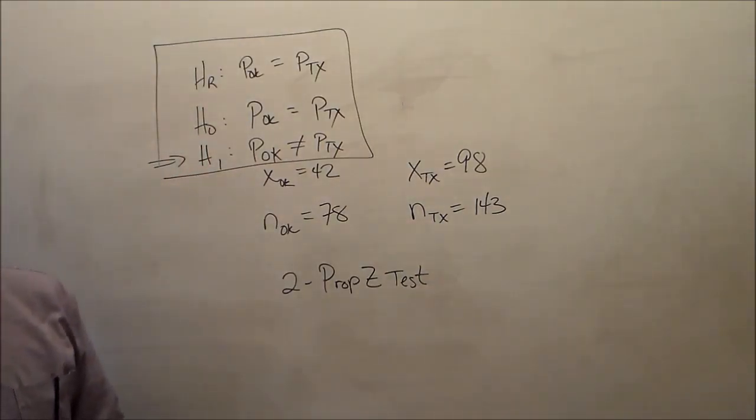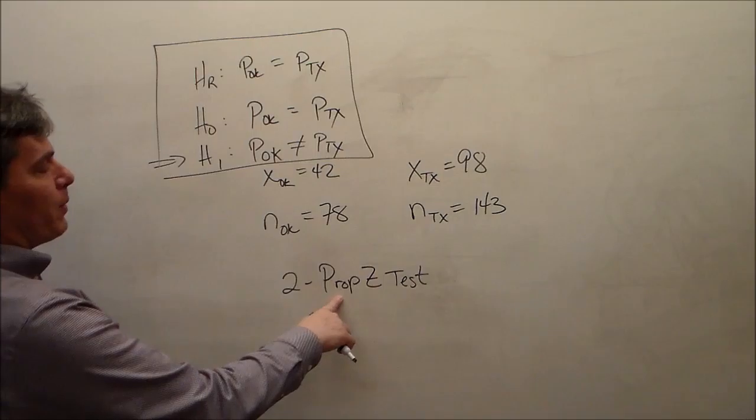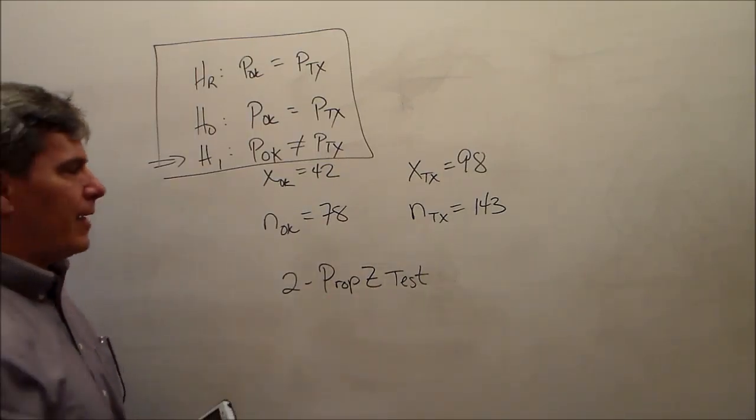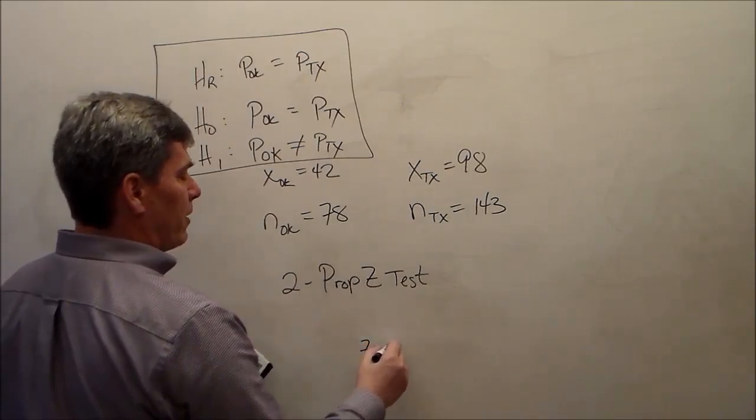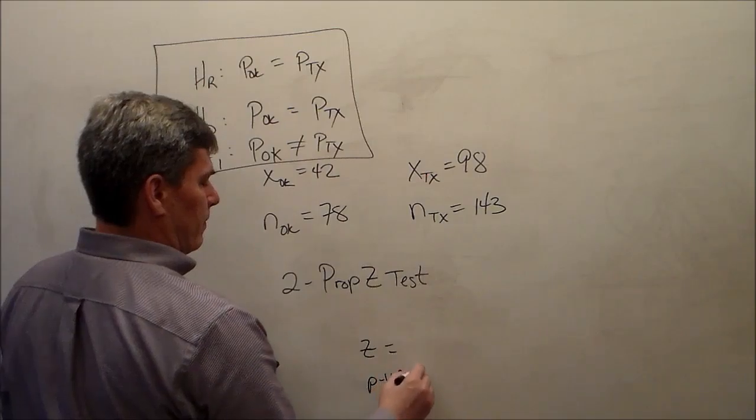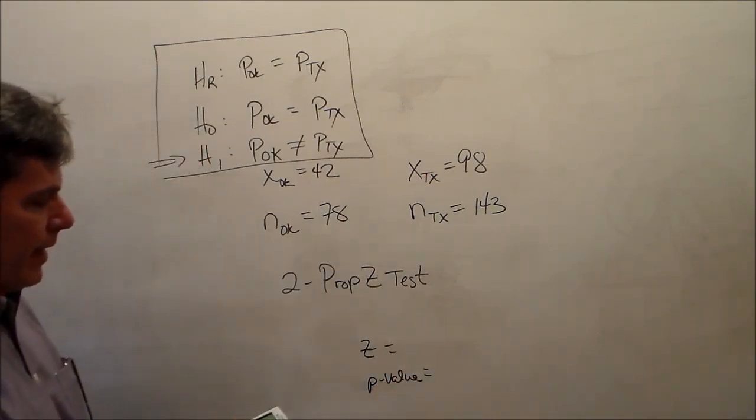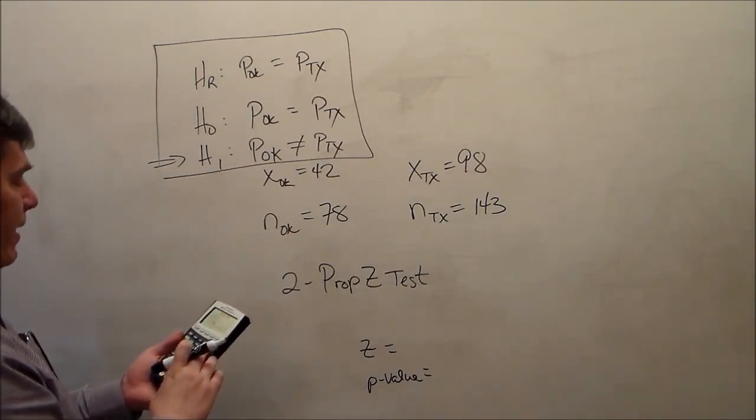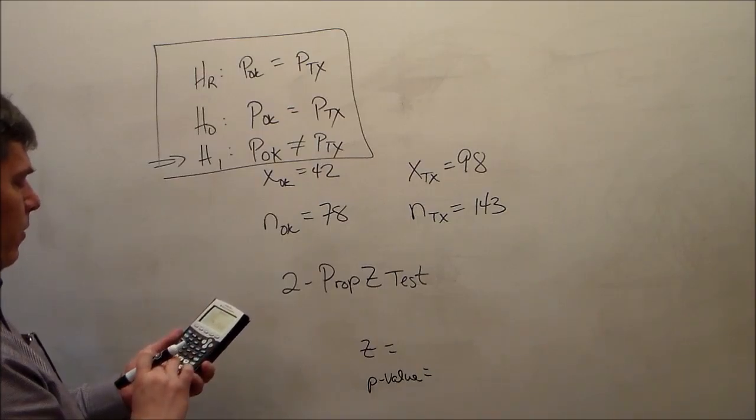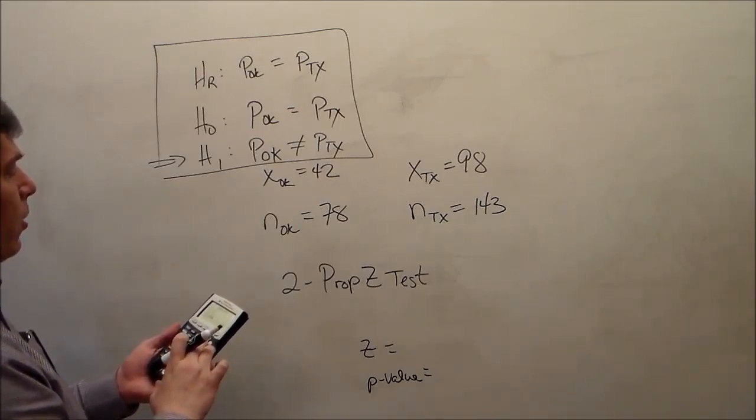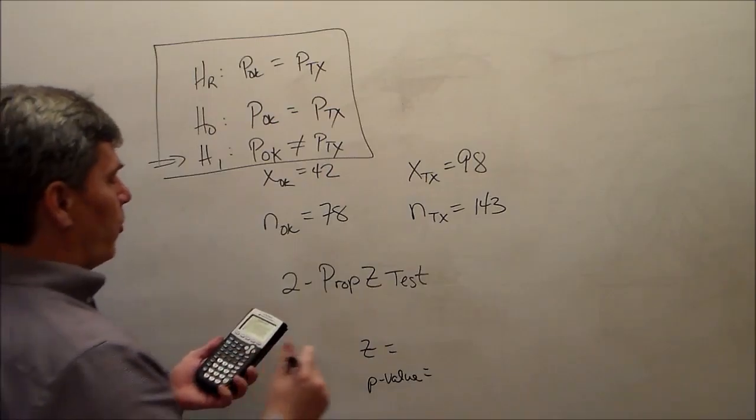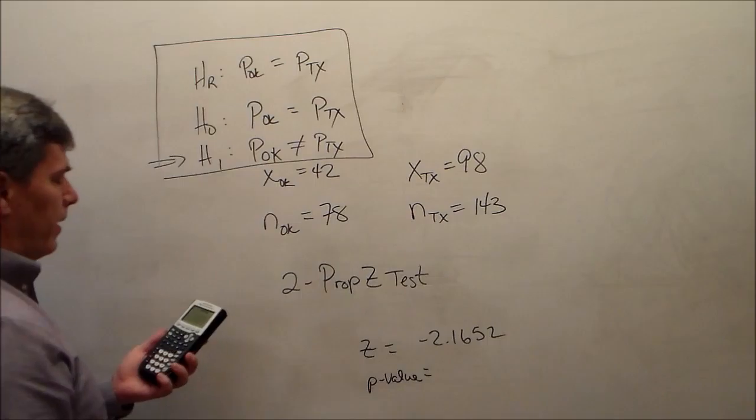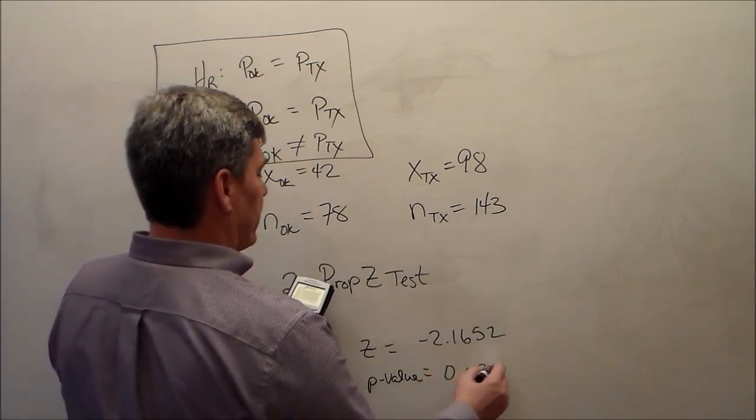So this is a two-sample proportions test. We'll use 2 prop z test. We're comparing proportions, the test statistic is z, and we're performing a test. And the test means that we're going to get a z value out and a p value. Let's just plug that information in. 42, 78, 98, 143, alternative is not equal, calculate. We get a z value of negative 2.1652 and a p value of 0.0304.